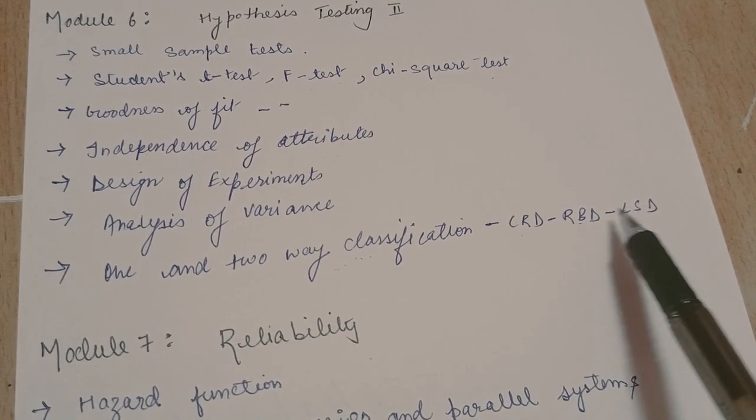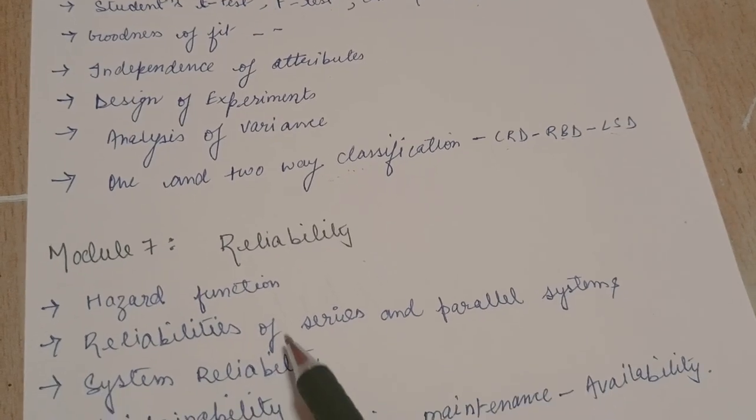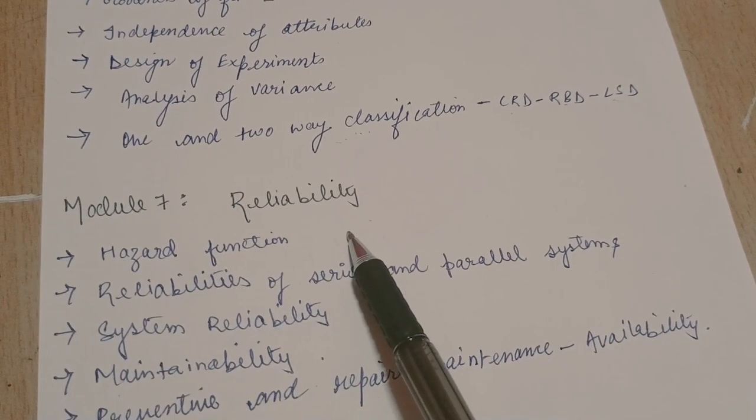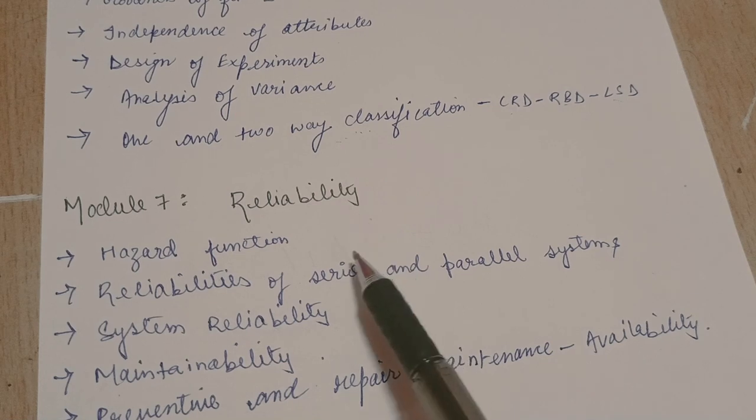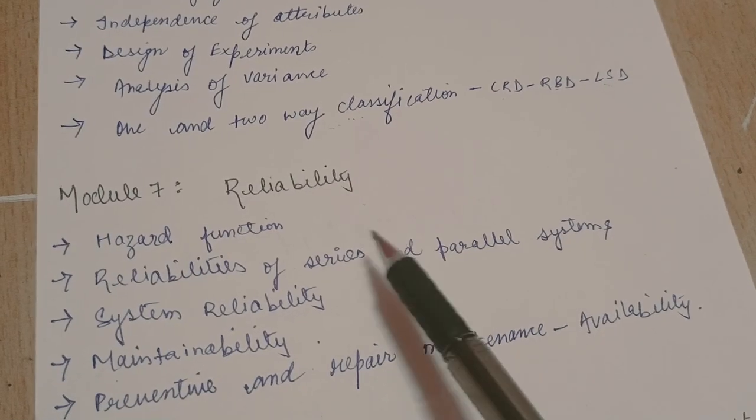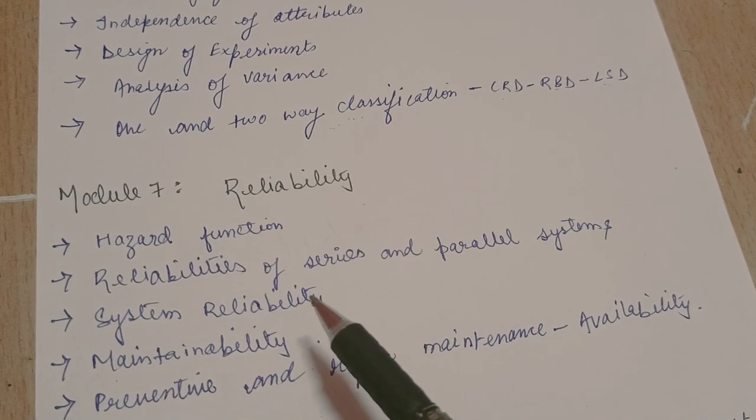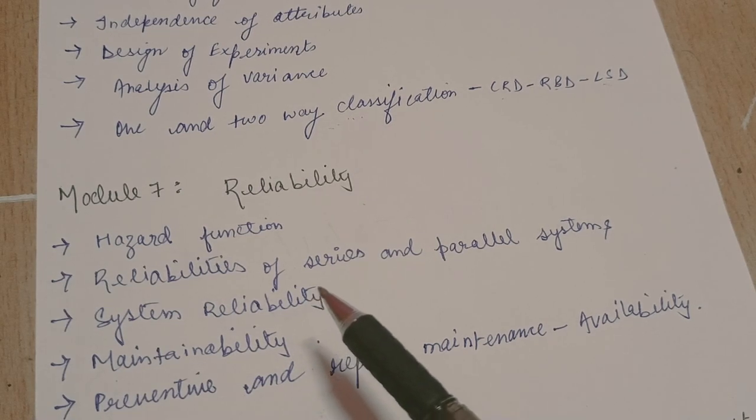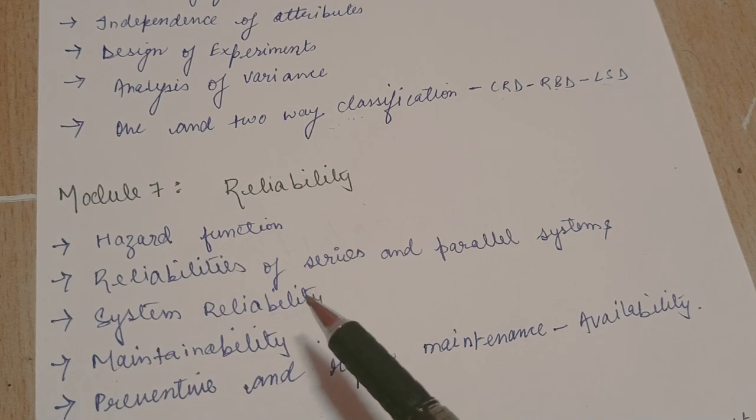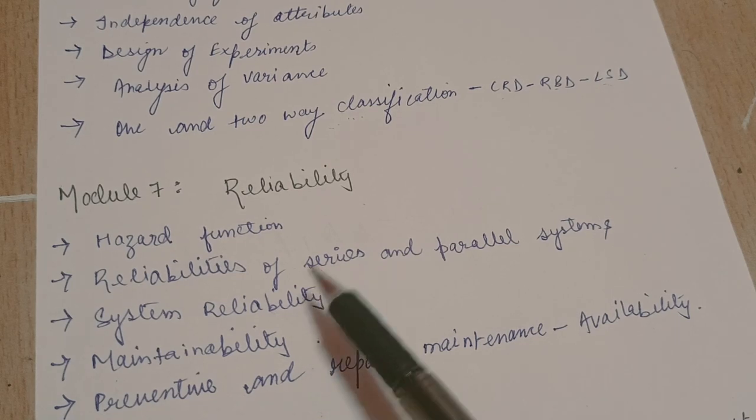RBD and LSD. Then comes the most easy and scoring topic, that is module 7, reliability. This module is very easy and you can easily score 10 marks from this module. This module has some formulas. You just need to understand the formula and how to apply them to the questions. And it won't take you even 10 minutes to solve the question and you would score 10 marks for that.